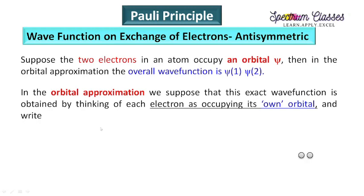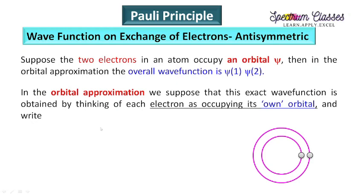In the orbital approximation, we suppose that the exact wave function is obtained by thinking of each electron as occupying its own orbital. Since the Schrödinger wave equation is solved for a one-electron system and the many-electron system has a very complicated solution, we simplify: if electron one occupies its orbital, its wave function is psi(1); electron two has wave function psi(2); and the overall wave function for the two-electron system is psi(1,2) = psi(1)·psi(2).